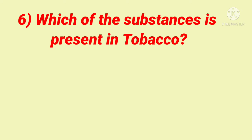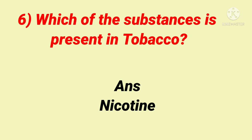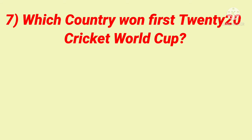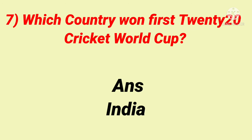Which substance is present in tobacco? Answer: Nicotine. Which country won the first T20 Cricket World Cup? Answer: India.